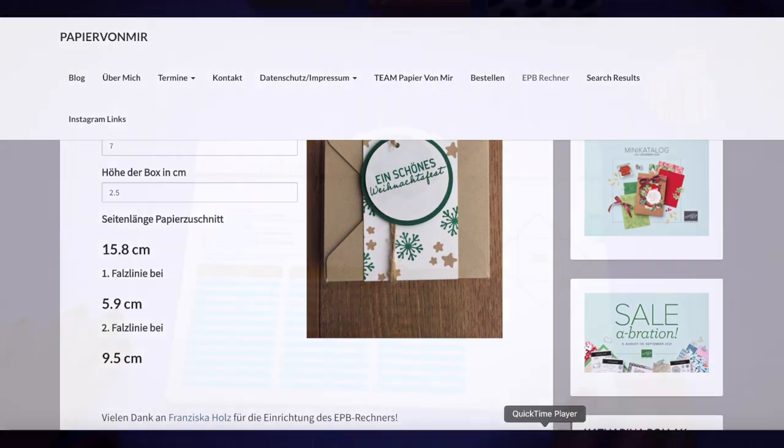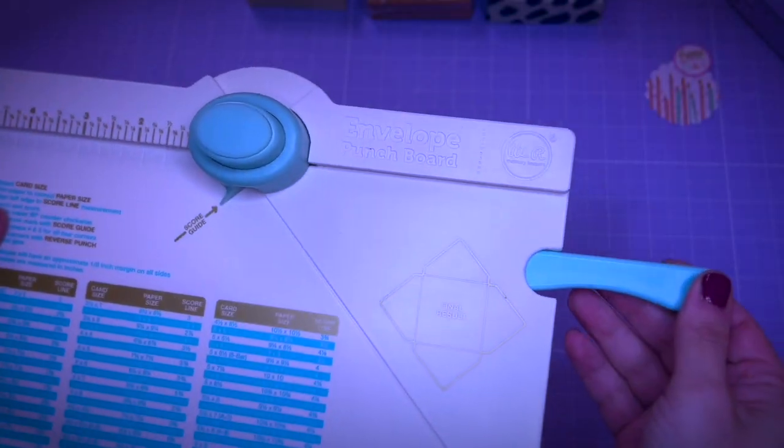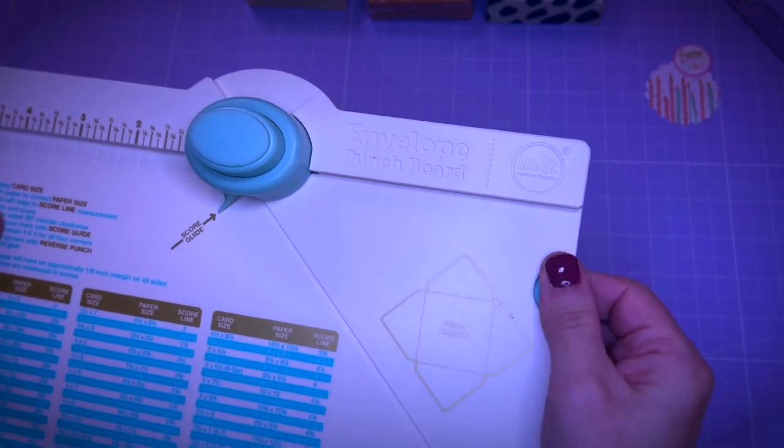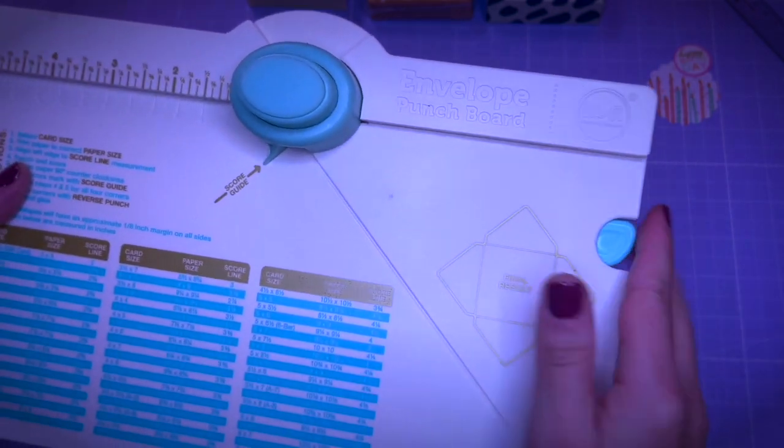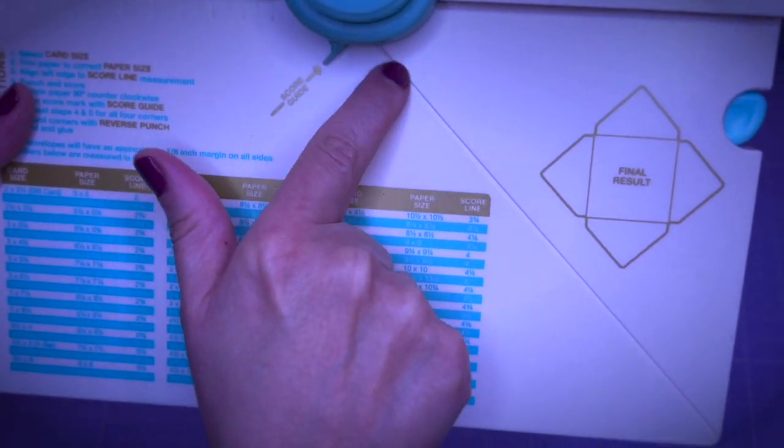If we take a closer look at the punch board, we see that it comes with a bone folder, the punch and the score line, but also this little nose over here that is an important guide in this project.